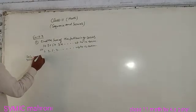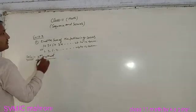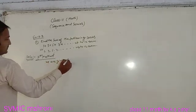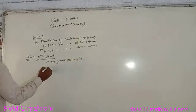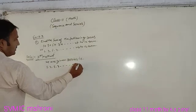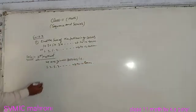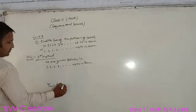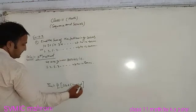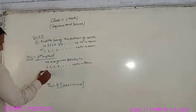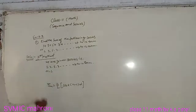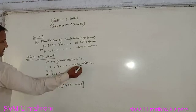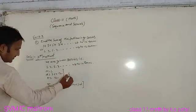First method. We are given series is 1, 3, 5, 7... Using formula Sn is equal to n/2[2a+(n-1)d]. a is equal to 1, a is the first term of the given series, and d is the common difference, 3 minus 1 is equal to 2, and n is equal to 12.